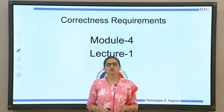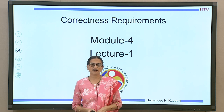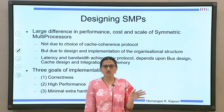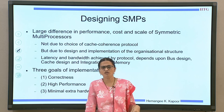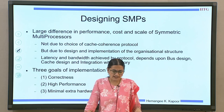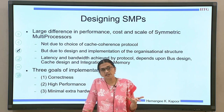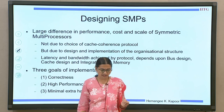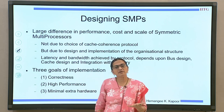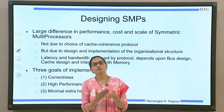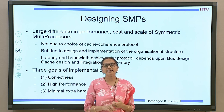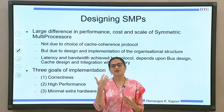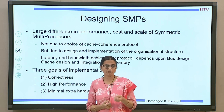This is lecture number 1 in which we are going to look at correctness requirements. When we are designing symmetric multiprocessors, there has been a large difference in the performance, cost, and scalability of various implementations. But at the bottom, the cache coherence protocols theoretically look all similar and processors are the same. So what brings out this difference in performance and cost? It is mainly how we organize all these components and how they interact with each other.